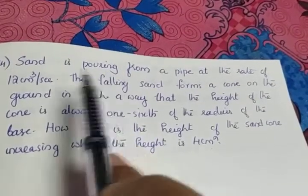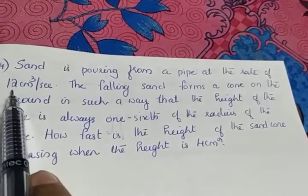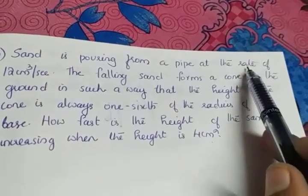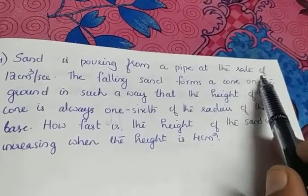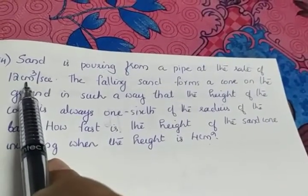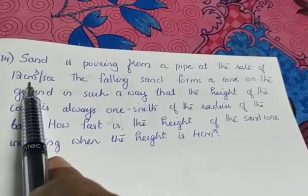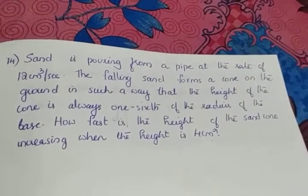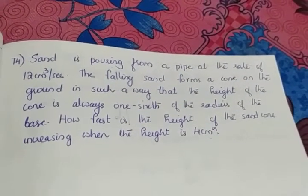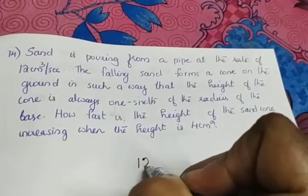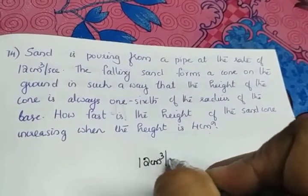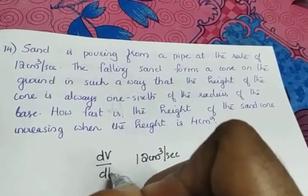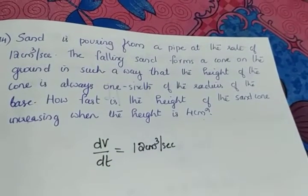From the first sentence: 12 cm³ per second. 'Per second' means it is a rate. The unit is cm³, which is the unit of volume. So what is given as 12 cm³ per second? That means dV/dt is given as 12 cm³ per second.